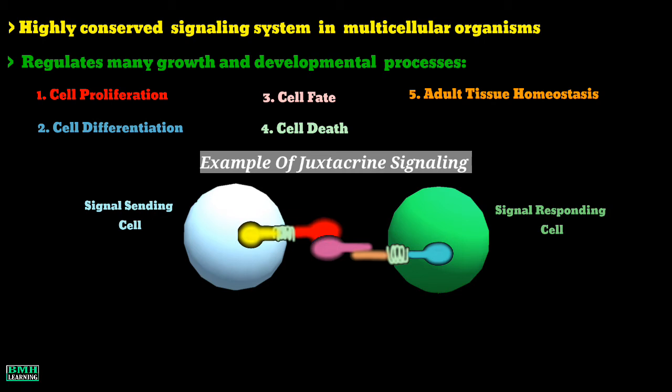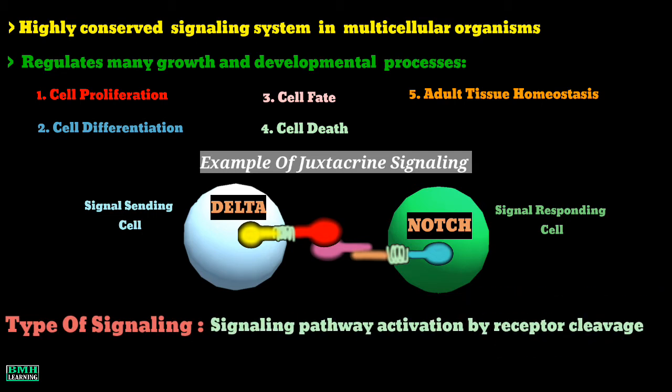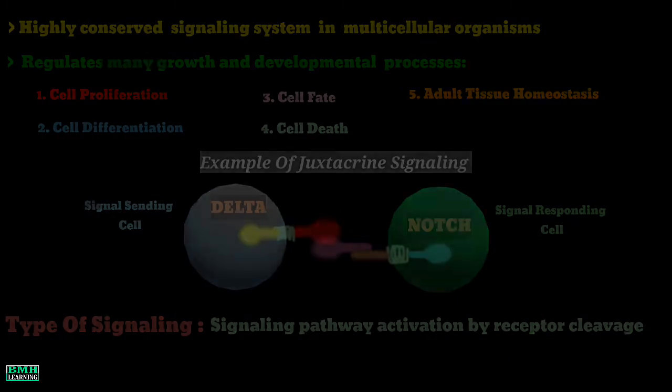The ligand present on the signal sender is named delta and the receptor to this ligand found on the signal receiver is called notch. Both the ligand and the receptor are single-spanning transmembrane proteins having three different domains. Notch signaling is a type of signaling where the signaling pathways are activated by ligand cleavage. We will discuss this concept very shortly. First, let's know a bit about the notch receptor.